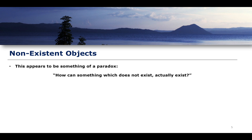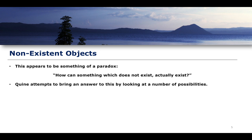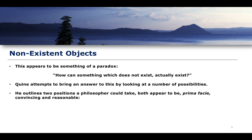This seems quite paradoxical. How can something which does not exist actually exist? We know that it doesn't exist, but we seem to have to be somehow ontologically committed to its existence. What Quine does is attempt to bring an answer to this by looking at a number of possibilities — ways to resolve this paradox in a satisfying manner. He outlines two positions a philosopher could take, both appearing to be at least prima facie — on their face — convincing and reasonable.